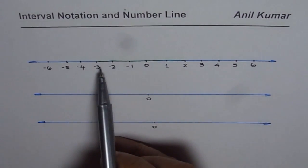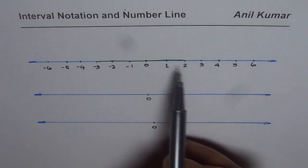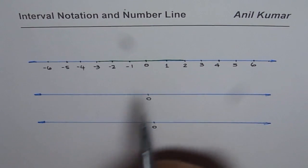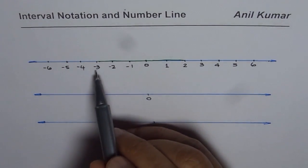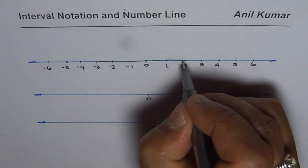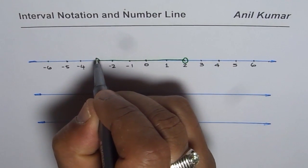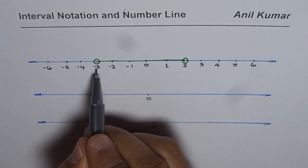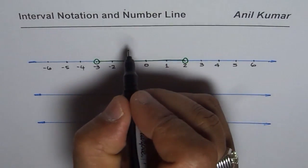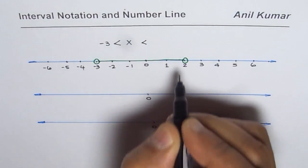I want to represent numbers between minus 3 and 2. This line has been drawn to show you a graphical look of what we are trying to do. When we say all real numbers between minus 3 and 2, we are not very clear whether we are including minus 3 and 2 or not. On a number line, if you make an open circle it means that 2 is not included, and if we make an open circle on the other end, minus 3 is also not included. So what we have is all the numbers x that are greater than minus 3 and less than 2.